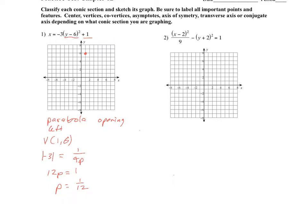This is a parabola opening to the left, which means 1/12 to the left of our vertex is the focus, and 1/12 to the right is the directrix. The directrix is a line: x equals 1 and 1/12, or 13/12. And the focus would be the point 1/12 to the left of 1, which would be 11/12, with y-coordinate 6.